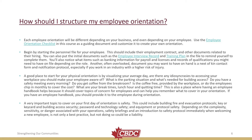You'll also need items such as banking information for payroll and licenses and records of qualifications on file depending on the role. Another often overlooked document is a next of kin contact form and notification protocol, especially if you work in an industry with a higher risk of injury. A good place to start for your physical orientation is by visualizing your average day. Are there any idiosyncrasies to accessing your workplace that you should make your employee aware of? Consider the parking situation, building access, whether you have a safety meeting every morning, coffee arrangements, break times, lunch hour, and quitting time. Having an employee handbook helps because it covers topics of concern for employees. If you have one, provide it to the employee during orientation.